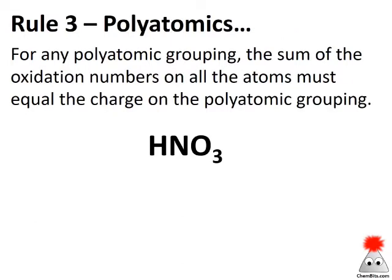Then we get to the polyatomics. For any polyatomic grouping, the sum of the oxidation numbers on all the atoms must equal the charge on the polyatomic grouping. Here we've got HNO3 — the charge is zero, it's neutral. So the oxidation numbers of hydrogen, nitrogen, and the three oxygens have to add up to zero.